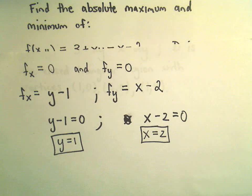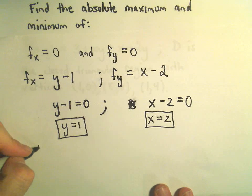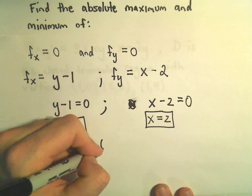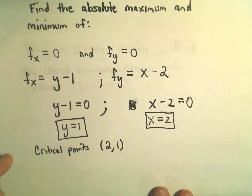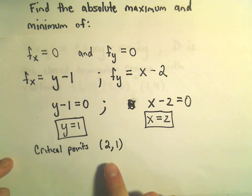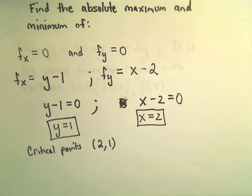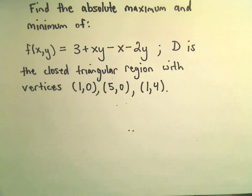So one of our critical points is going to be at (2,1). We still have to make sure that this critical point is within our boundary, because otherwise we won't even use it.